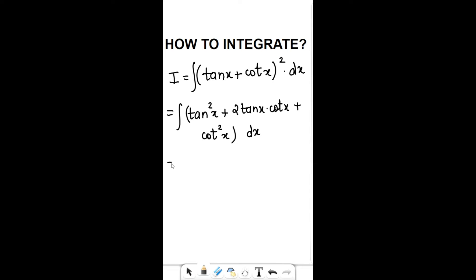If you can see, tan x and cot x are reciprocals of each other, so that will get cancelled. We will only be left with tan²x + 2 + cot²x dx.